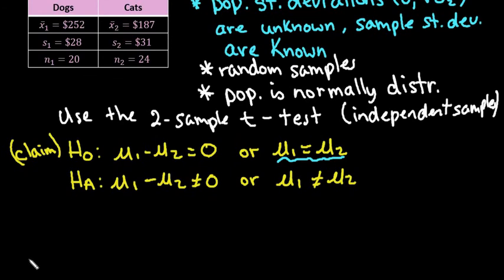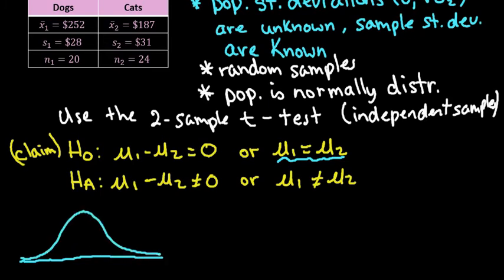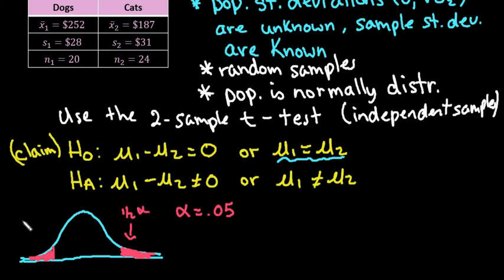Because I'm doing hand calculations, I'm going to use a rejection region. I'll draw a normal curve — this is two-tailed, so I shade both tails. The significance level is alpha equals 5%, so half of alpha goes in each tail. If our test statistic falls in either shaded region, we reject.